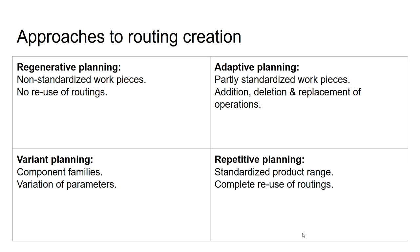If you have a fully standardized product range, we can talk about repetitive planning. Repetitive planning involves a complete reuse of routings. You only have to adjust the start and end date, or data that is not related to any feature or function of the product. Essentially there is a complete reuse of existing routings — you are not creating new routings, not adjusting the operations, and not varying parameters. Those are the four major approaches to creating a routing.